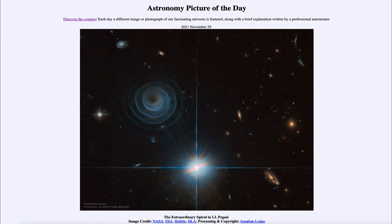So that was our picture of the day for November 29th of 2021, titled The Extraordinary Spiral in LL Pegasi. We'll be back again tomorrow for the next picture, previewed to be planet with moons. So we'll see what that is about tomorrow. And until then, have a great day everyone, and I will see you in class.